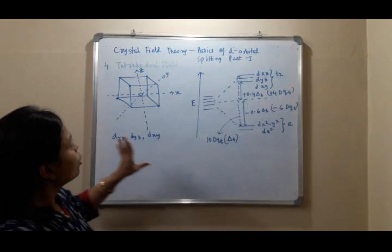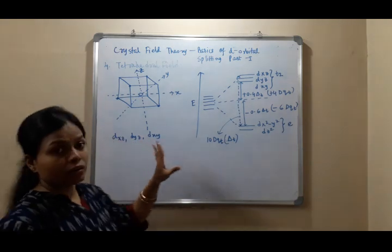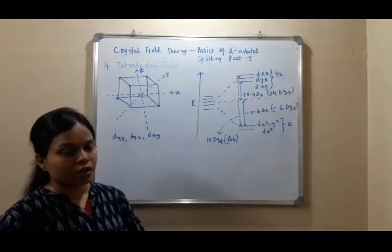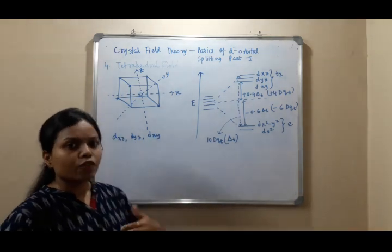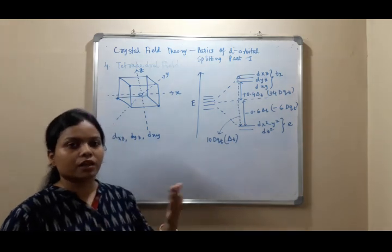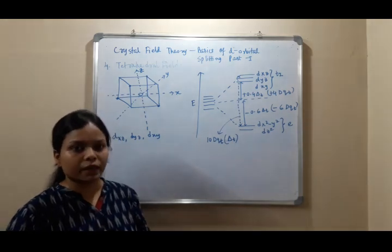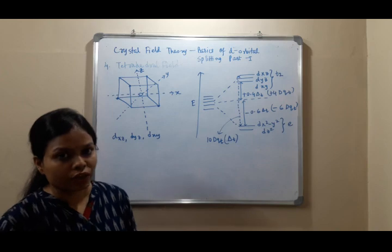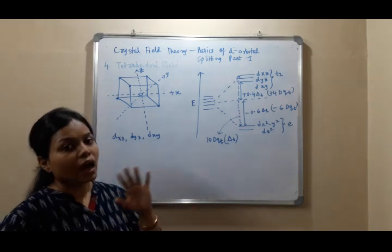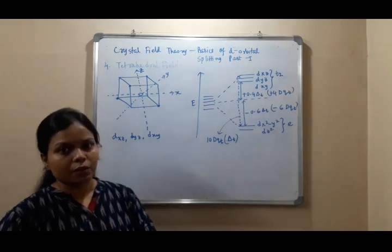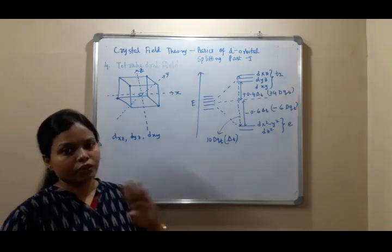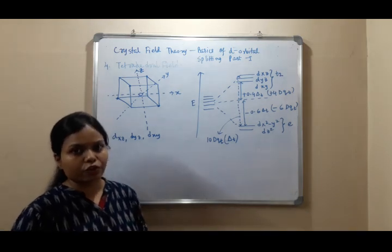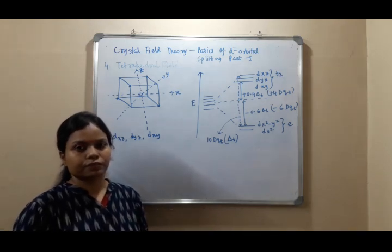So these are the splitting patterns in the presence of the four fields I have discussed. Please follow the next video — d-orbital splitting in various geometries Part 3 — for the other three splitting patterns in other three geometries. Thank you.